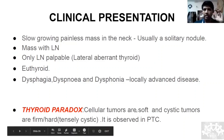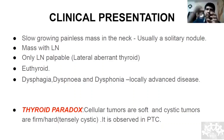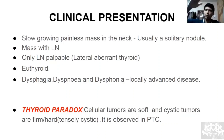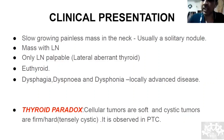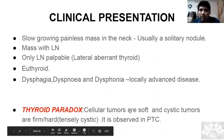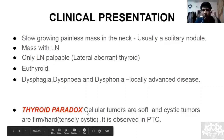Are thyroid swellings cystic or hard? This is the thyroid paradox: cellular tumors are soft and cystic tumors are hard. Think of a completely full water bottle — it's so tense you can't squish it, so you can't appreciate the cystic feeling, and it feels hard. Cellular tumors are soft because the thyroid is a fleshy organ, like muscle.